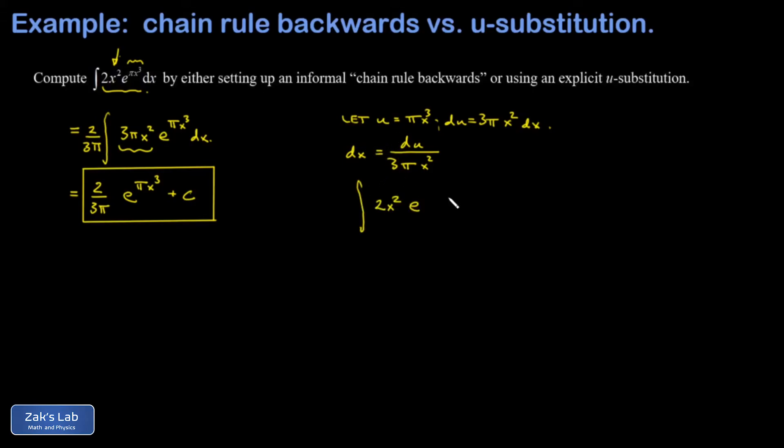Remember πx³ was u, so I have an e to the u there, and then dx is du over 3πx². Now if we didn't have the right function piece there, that x², the substitution wouldn't work. So those cancel out and everything cleans up really nicely.